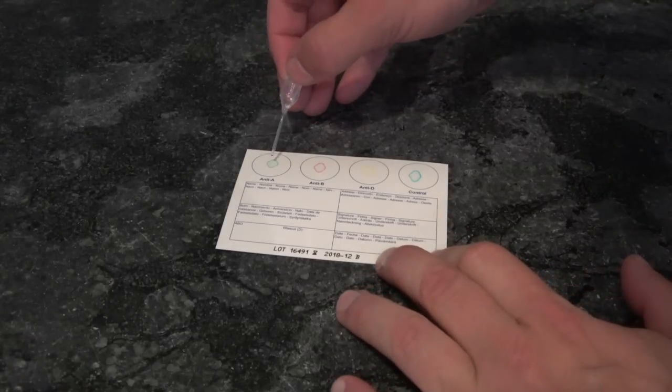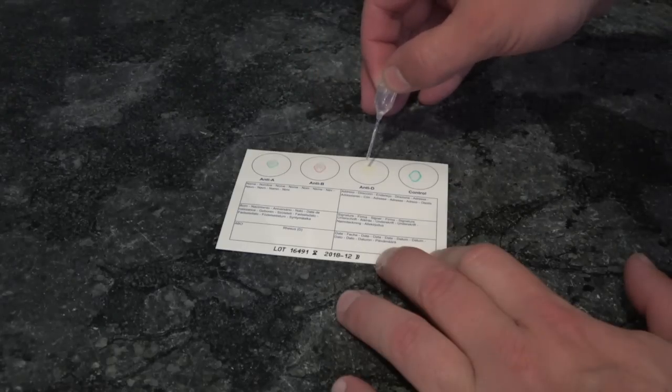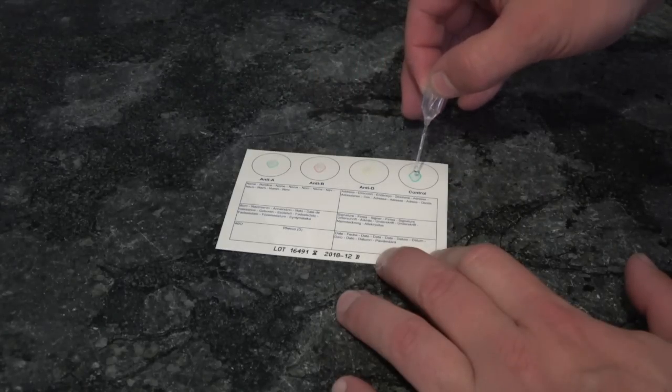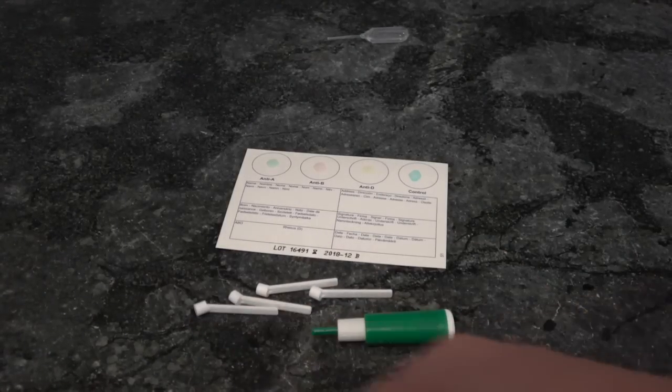First thing I did was fill the pipette with water and I'm going to place one drop on each of the colored dots, and you want to make sure you don't touch those dots with the pipette. Next, I get out my Eldon sticks so that they're ready to use.